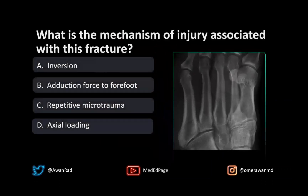I hope everyone sees this lucency here. This is along the base of the fifth metatarsal. There is a fracture here — it's a comminuted non-displaced fracture. It's non-displaced because we don't see fracture fragments displaced anywhere, but it is comminuted because we can see a fracture line there, a fracture line there, a fracture line there — certainly more than two parts.